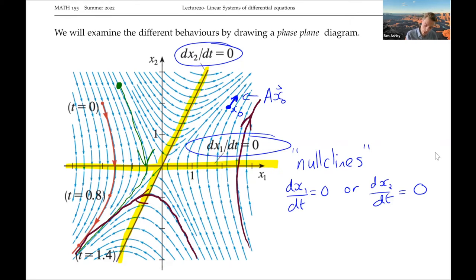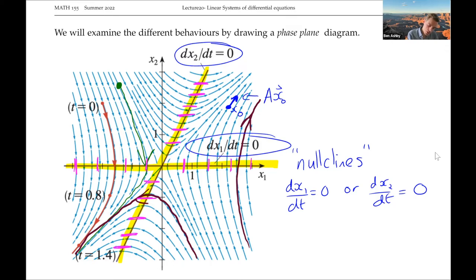What nullclines tell us is that as we cross a nullcline, only one of those state variables is changing. For example, on the dx2/dt equals zero nullcline, we need to be going horizontally - there's no change in the vertical direction, no change in x2. Likewise, on the dx1/dt equals zero nullcline, there's only a change in the vertical direction; we're not changing x1 at all, though x2 may be changing.